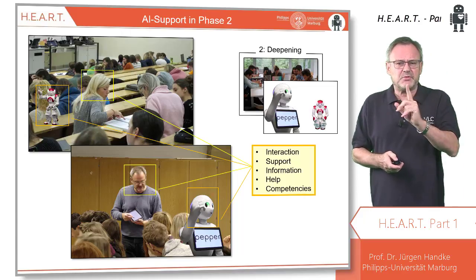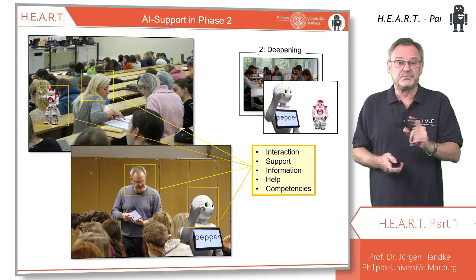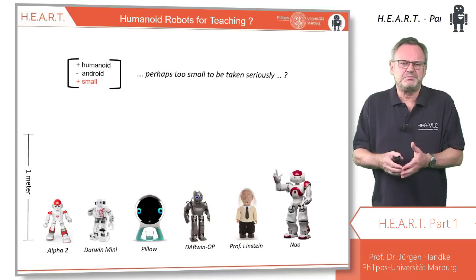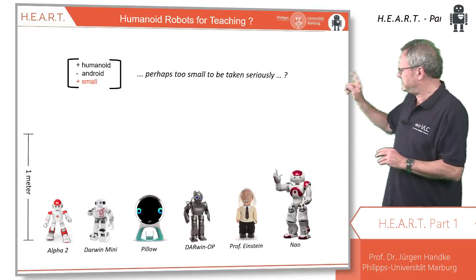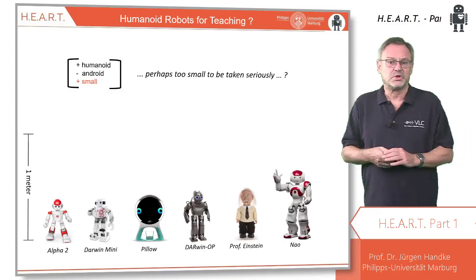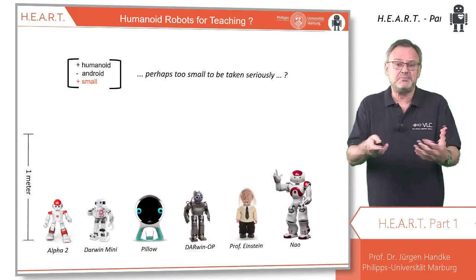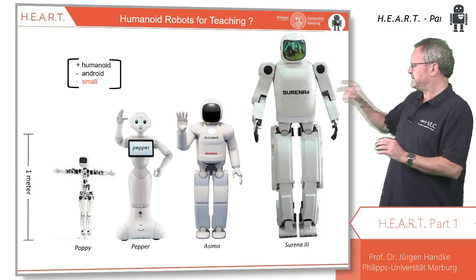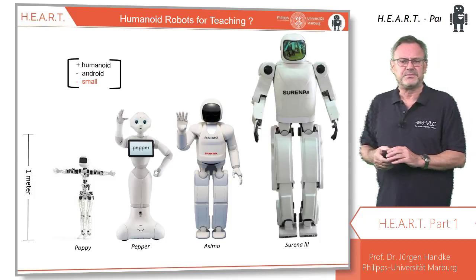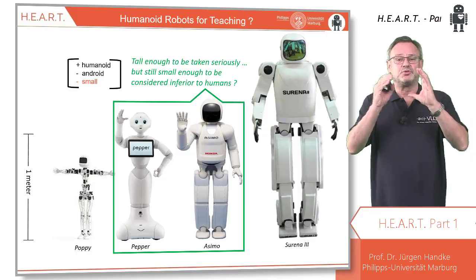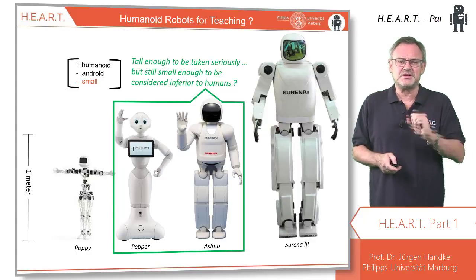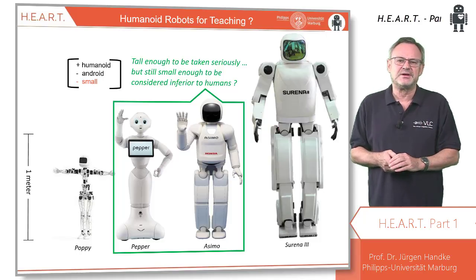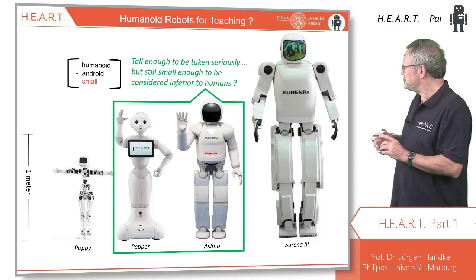But what type of robots do we need? Perhaps size is an important issue. Maybe they shouldn't be as small as some fellows whose height is way below one meter, but not too tall like some others. In other words, tall enough to be taken seriously, but still small enough to be considered inferior to humans.